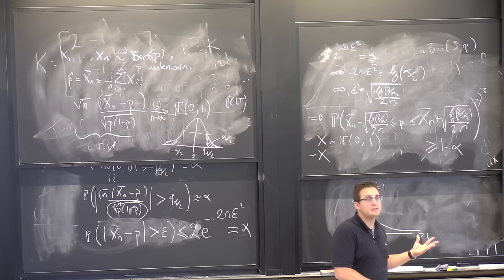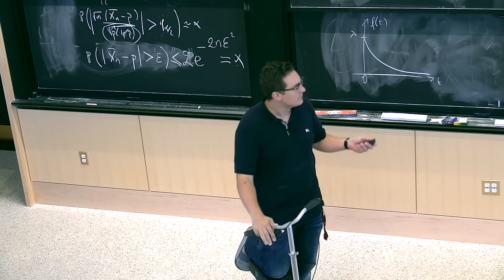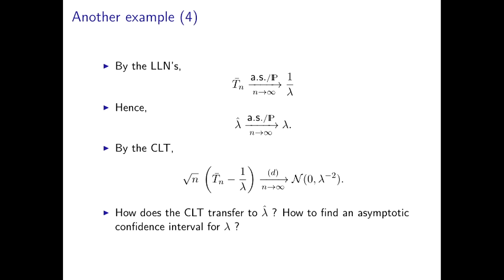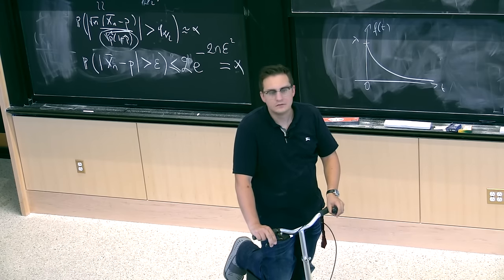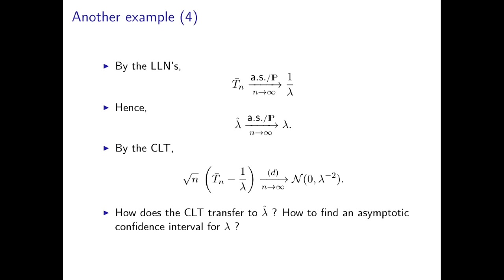The delta method says: you can take a function of an average, and you still get a central limit theorem, with a factor depending on the derivative of the function. It's essentially just a first-order Taylor expansion — linear approximation. So if I have sqrt(n)·(zn - θ) converging to a Gaussian, then sqrt(n)·(g(zn) - g(θ)) also converges to a Gaussian, with variance scaled by the square of g'(θ).